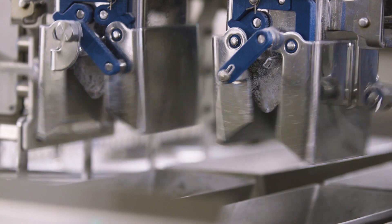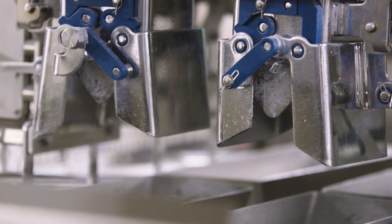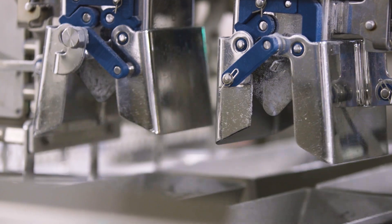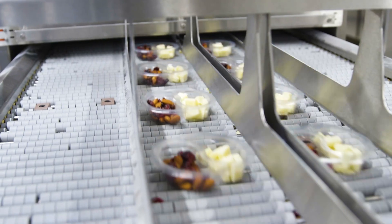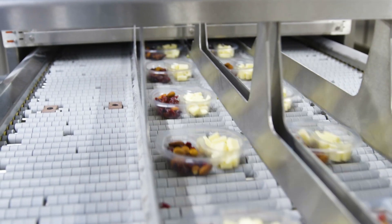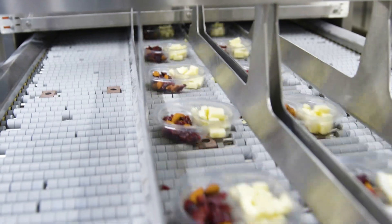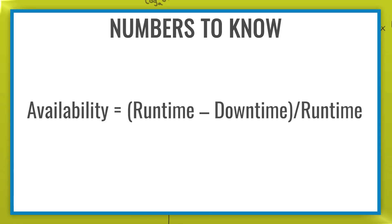We can use downtime to calculate how our lines are performing. First, we calculate a line's availability, which is the percentage showing the amount of time that a line is actually running within a specific timeframe. This is the formula for calculating availability.